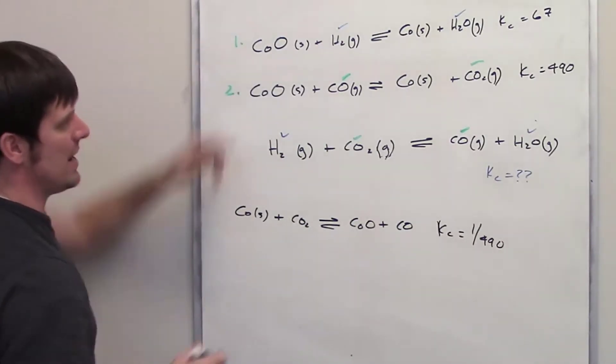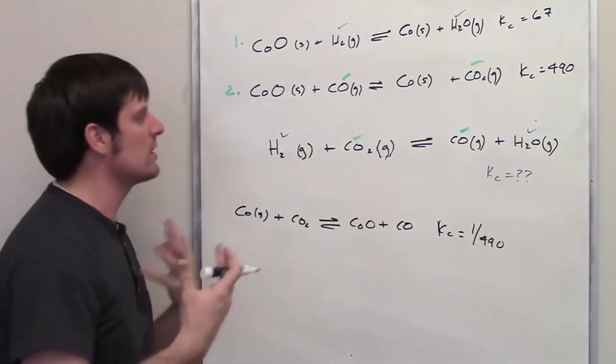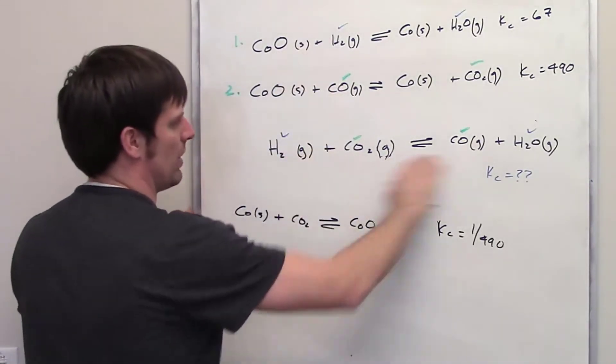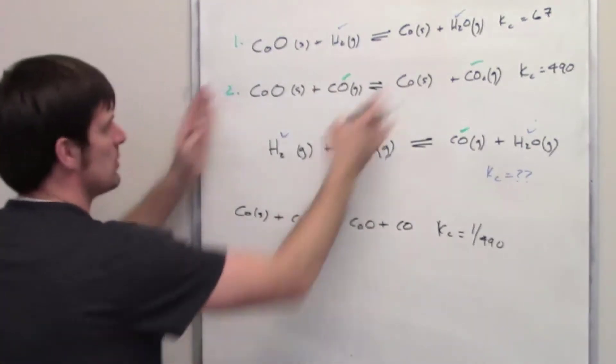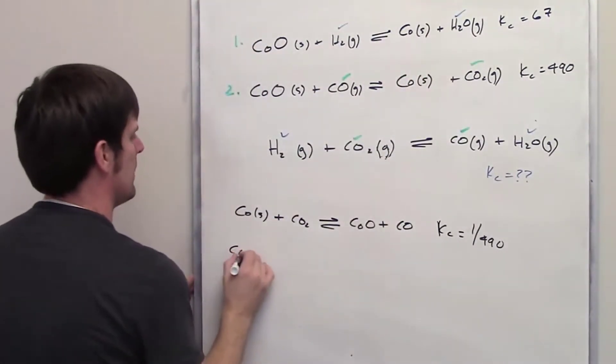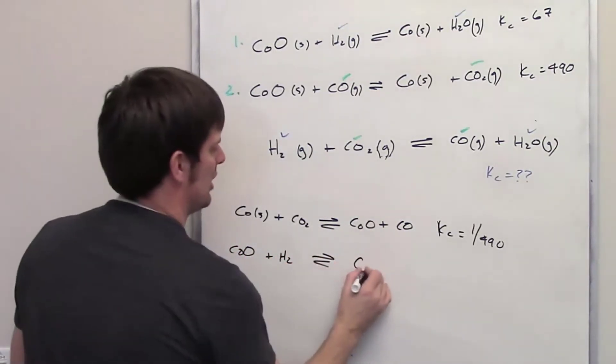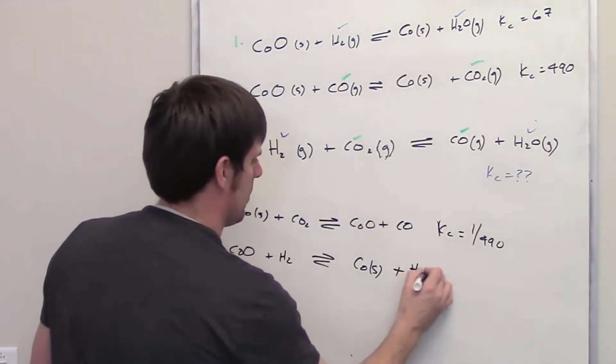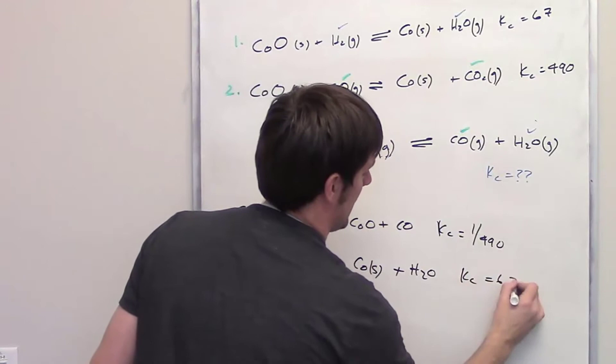Now you'll notice that equation one here. I didn't have to do anything to it because everything happened to be on the right or the correct side with respect to where it lies in the final overall equation. I also didn't have to multiply it by anything. So what I'm going to do is I'm going to take equation one. I'm just going to bring it straight down here. So I've got cobalt oxide plus H2 and then I've got cobalt solid plus H2O. Now the Kc value, because I haven't made any changes, is going to be the same.